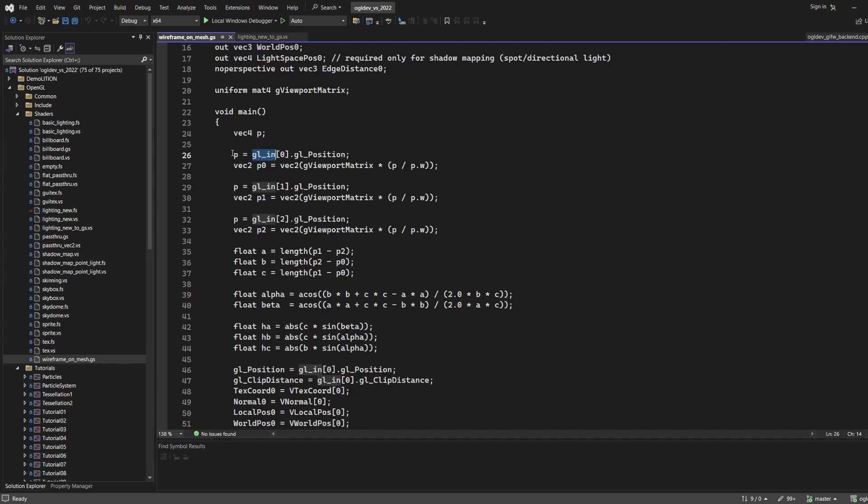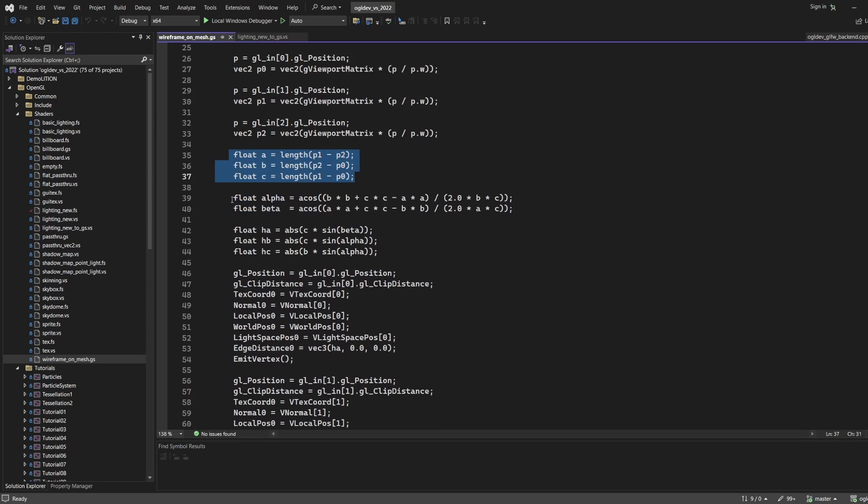We now have the screen space position of the three vertices. Next we calculate the length of the three edges in screen space, and we use the law of cosines to calculate the distance from each vertex to the opposing edge.